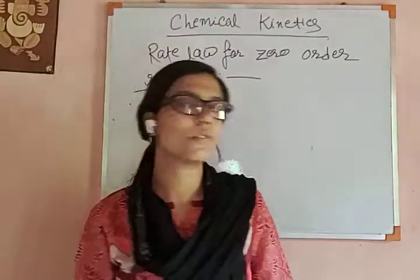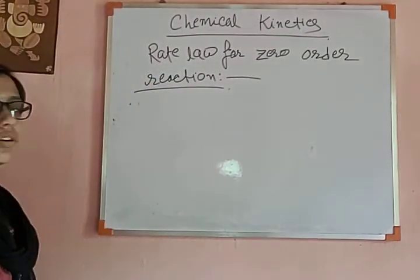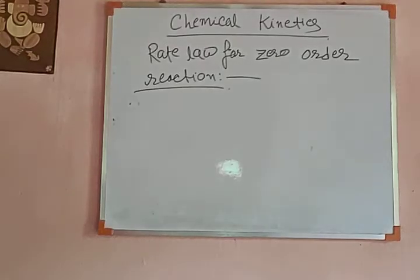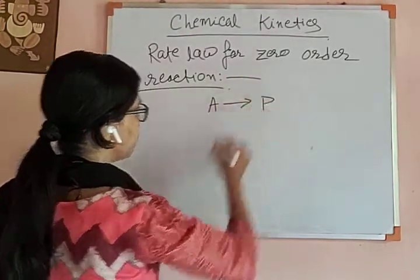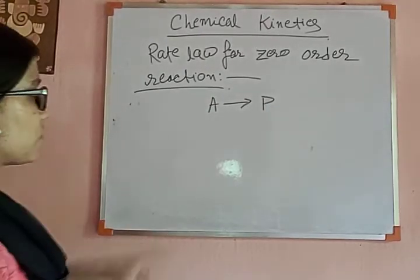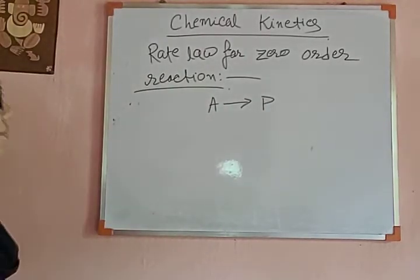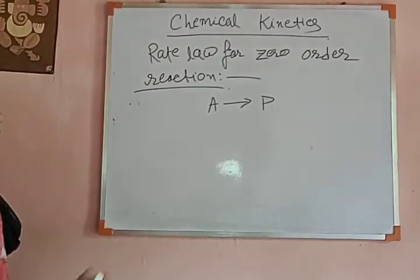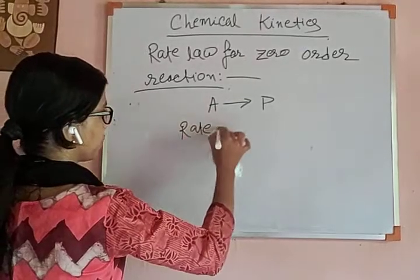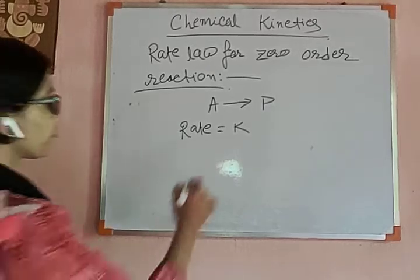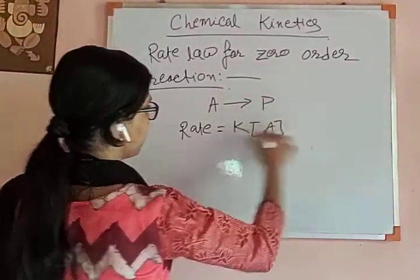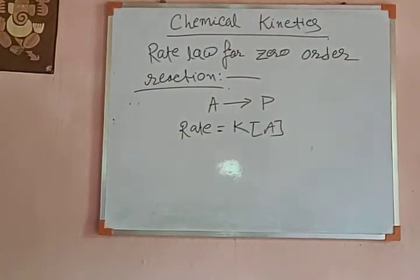In today's class we will start from the rate law of a zero order reaction. So first we are writing a zero order reaction — suppose the general reaction is A to P, where A is the reactant giving product. For rate, you can write: rate equals K, the rate constant, times concentration of A, and the order of the reaction goes to the power of the reactant concentrations.